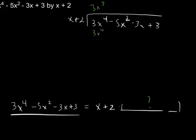We also need to think about what 3x cubed times 2 is going to be, because the distributive property tells me this whole thing will be multiplied by each piece of my polynomial. So that's going to give me 6x cubed. It's important to remember that that is cubed. Now we want to subtract away this whole piece, because we want to know what's left over that I'll need to get when I multiply my polynomial by x plus 2.